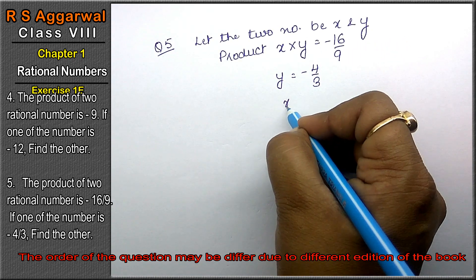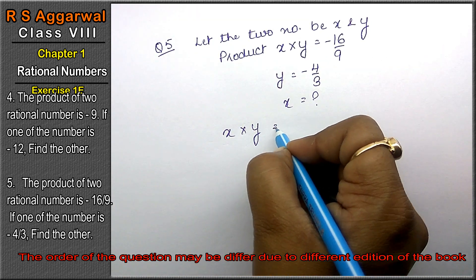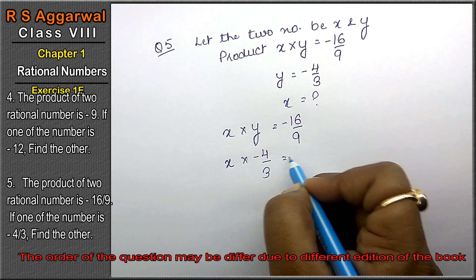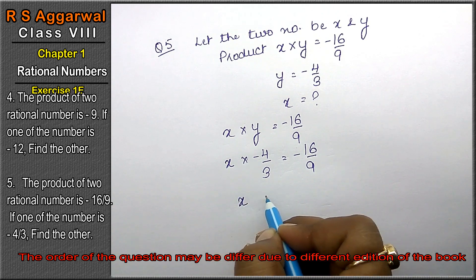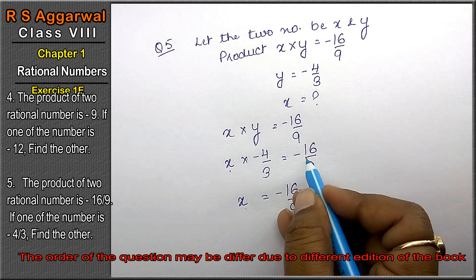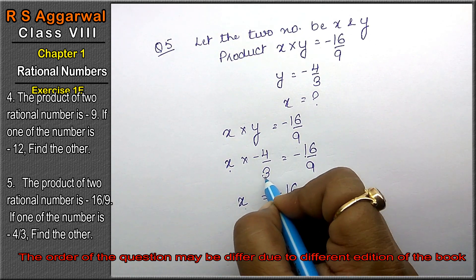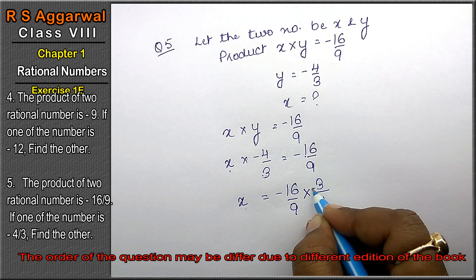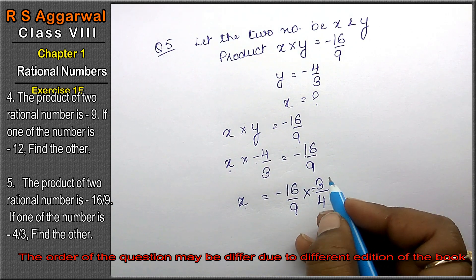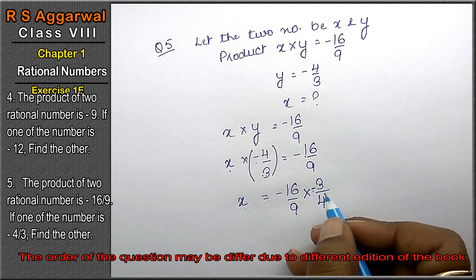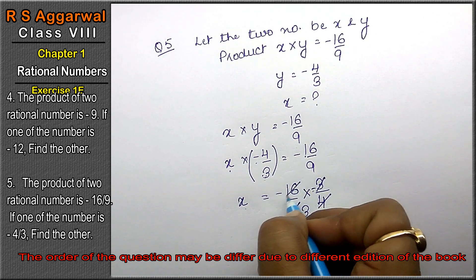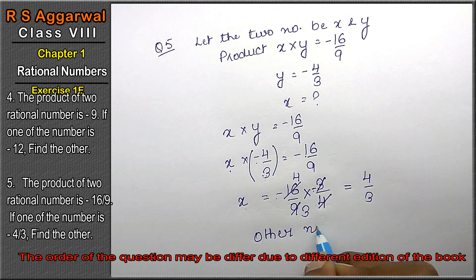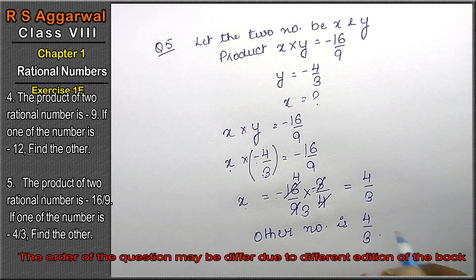We need to find x. x multiplied by y = -16/9, and y = -4/3. So x × (-4/3) = -16/9. Dividing: x = -16/9 ÷ -4/3. The denominator flips: x = -16/9 × -3/4. Since 3 ones are 3, 3 threes are 9, 4 ones are 4, 4 fours are 16, and minus times minus is plus — we get 4/3. Hence, the other number is 4/3.